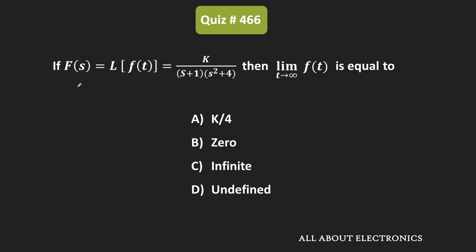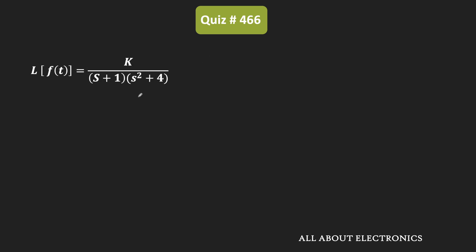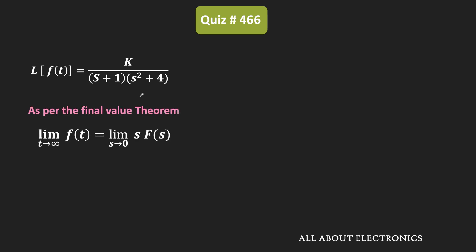In this question, we have been given the Laplace transform of some function f(t). We have been asked to find the value of this function at time t = infinity. Since we do not know the function f in the time domain, we will find the value at t = infinity using the final value theorem. As per the final value theorem: limit t→∞ of f(t) = limit s→0 of s·F(s), where F(s) = k / [(s+1)(s²+4)].